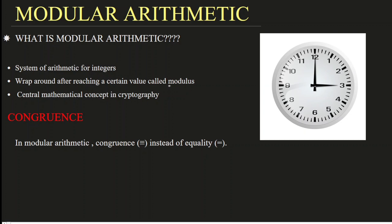And it wraps around after reaching a certain value called the modulus. So here you will encounter the word modulus. Modular arithmetic means it wraps around after reaching a certain value called modulus. After reaching that certain value, it starts again — this is one key point.